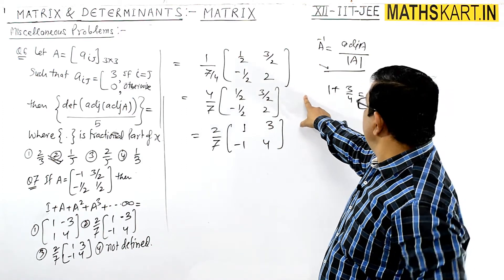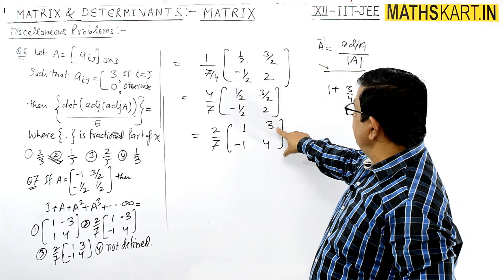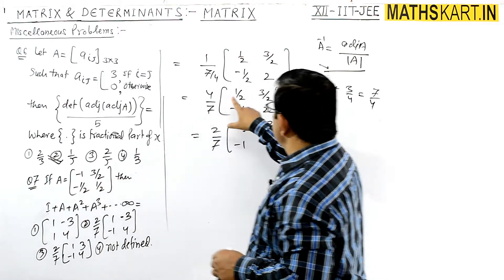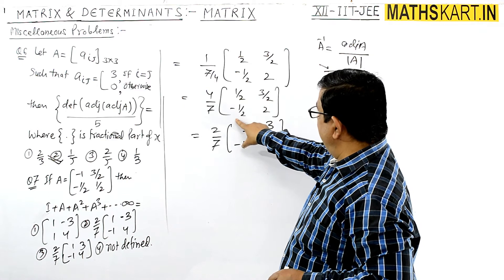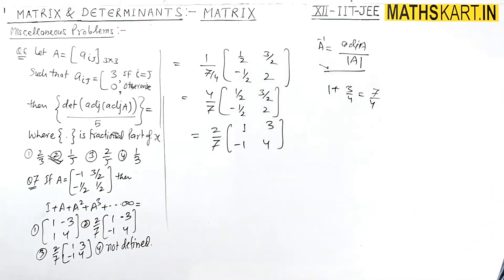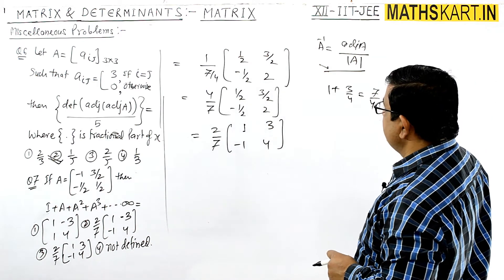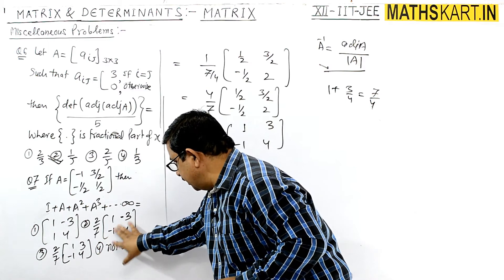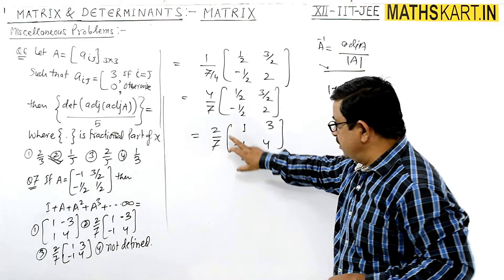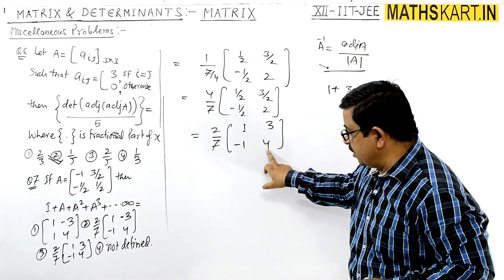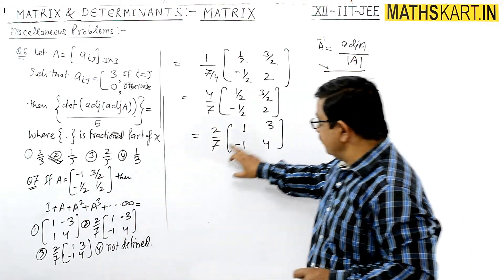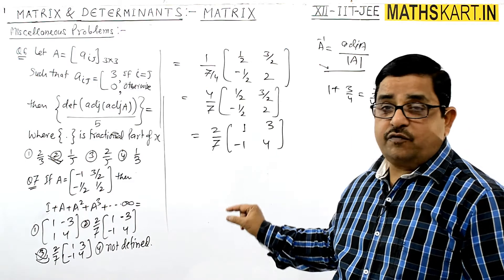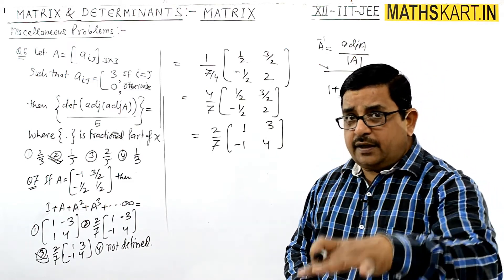Checking the options: the second option has a sign error on the off-diagonal. The third option gives (2/7) × [[1, 3], [−1, 4]], which matches our result. So the third option is correct. The answer is (2/7) × [[1, 3], [−1, 4]].